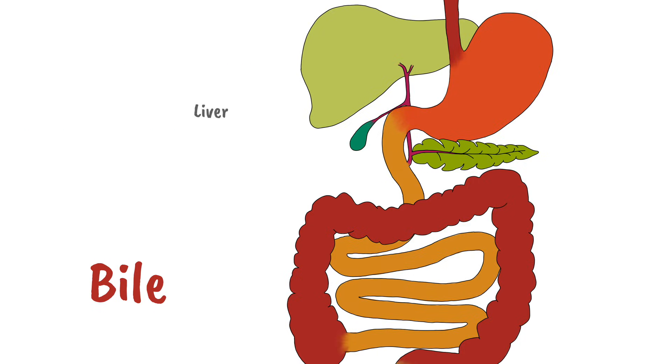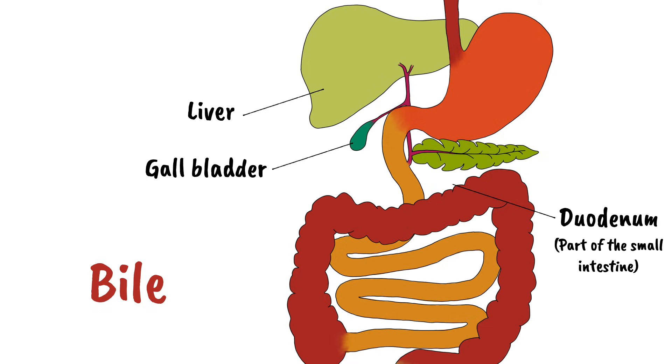Bile is produced in the liver and stored in the gallbladder before being released into the small intestine at a section called the duodenum, where it mixes with chyme.